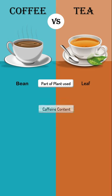The second point is caffeine content. Tea has 15 to 70 mg per cup, and coffee has 80 to 180 mg per cup.